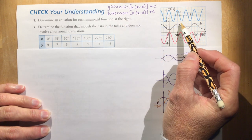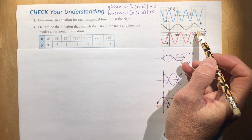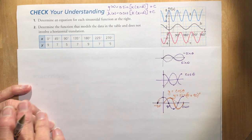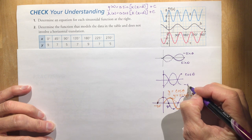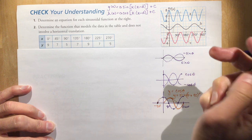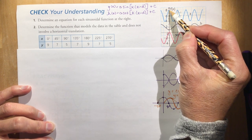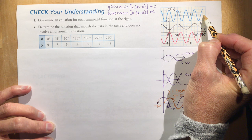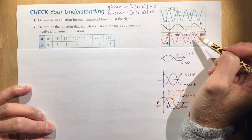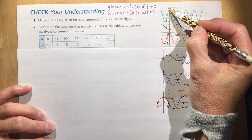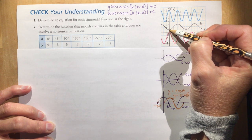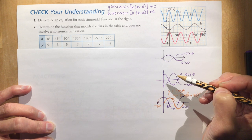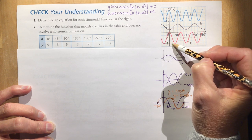Looking at the blue graph, we decide which function type to use — positive or negative sine or cosine. This graph starts at its maximum, not on the axis, so we choose a cosine function. For Graph A: starts at maximum → positive cosine. Graph B: starts at the lowest point → negative cosine. Graph C: starts at the highest point → positive cosine.